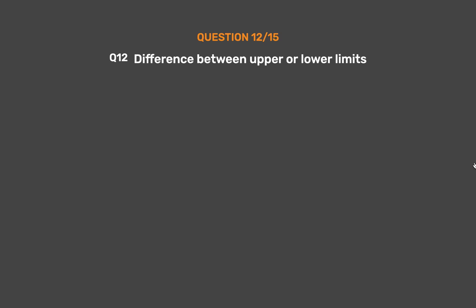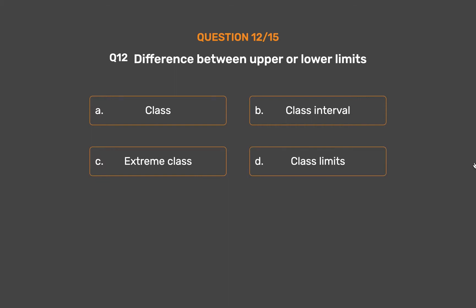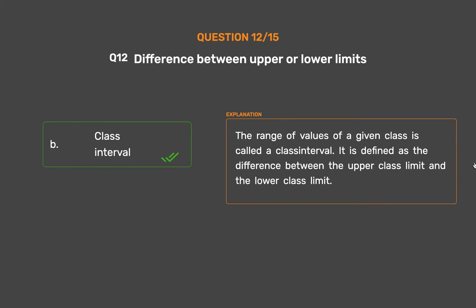Question number 12. Difference between upper or lower limits: Option A: Class. Option B: Class interval. Option C: Extreme class. Option D: Class limits. The correct answer is Option B: Class interval. The range of values of a given class is called a class interval. It is defined as the difference between the upper class limit and the lower class limit.